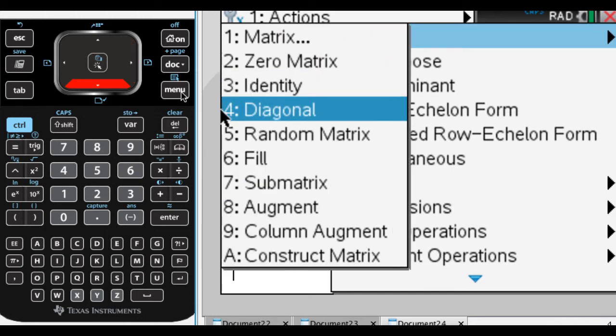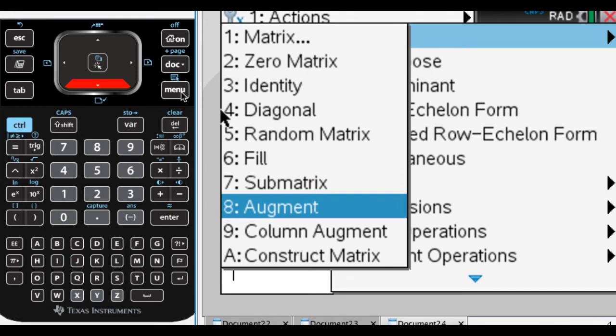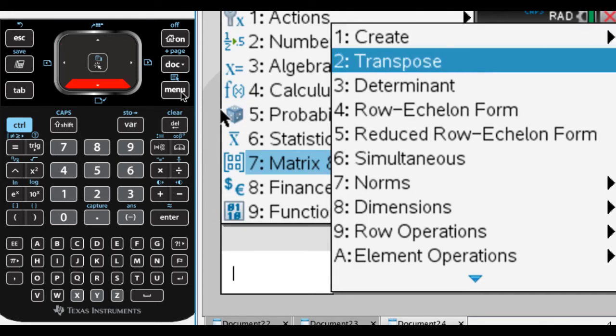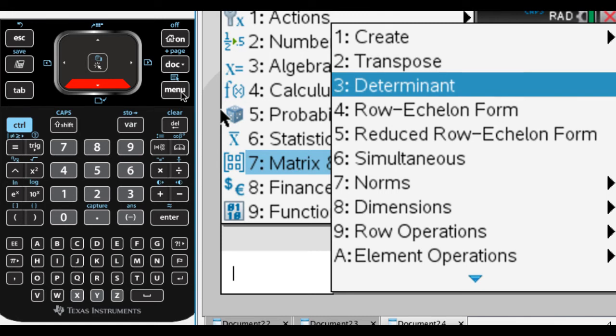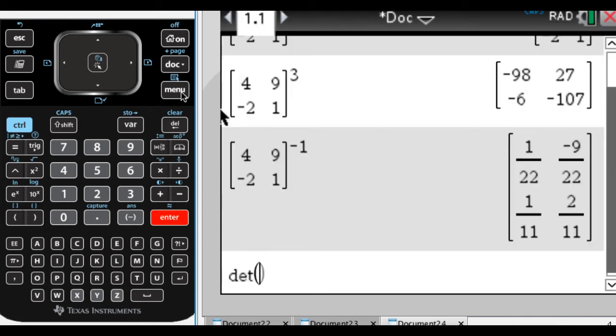We have create a matrix with a lot of options in there—I don't use that much. Transpose switches the rows and columns. Determinant is what we want to find, so I'm going to find the determinant of...